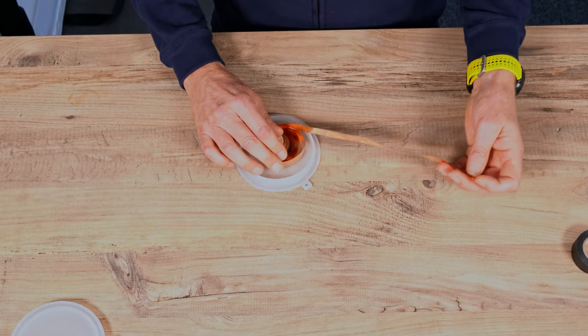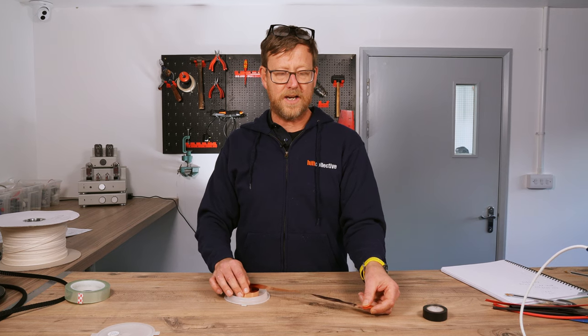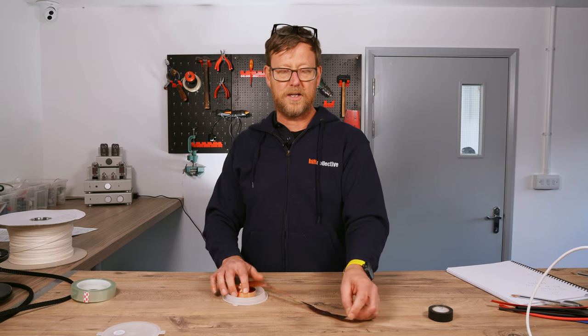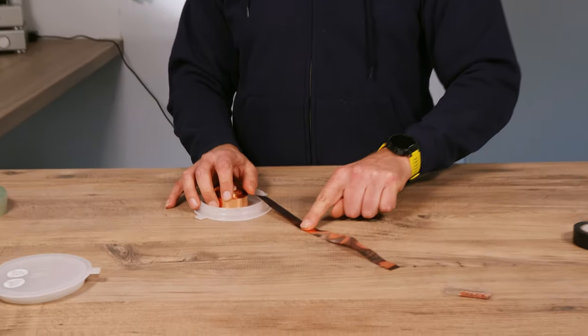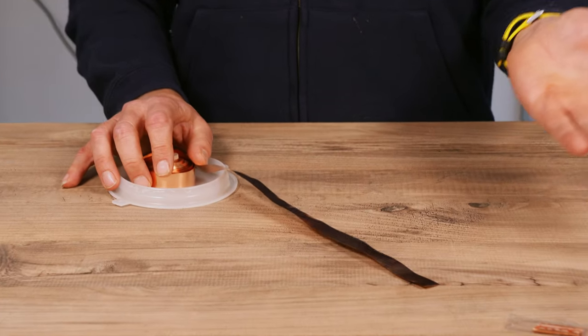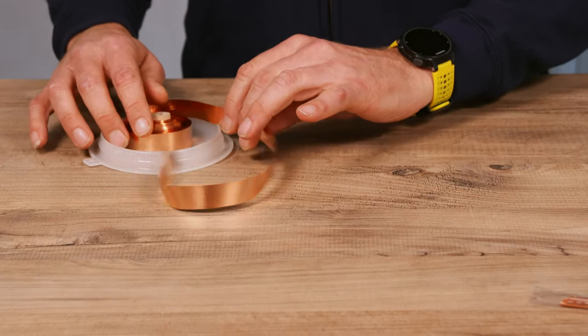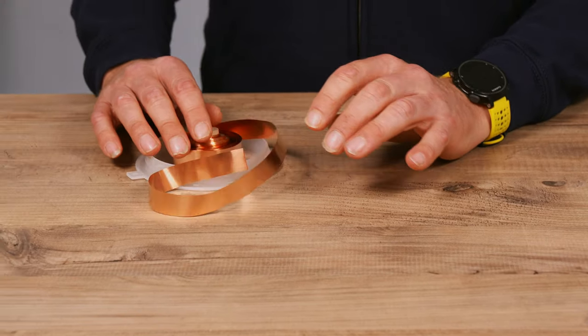When you get yours it will be tightly reeled. The main issue when working with this foil is that it does have a tendency to crimple. Can you see how it's a bit up and downy? I mean obviously it's still going to conduct in that state, but you want to try and keep it as flat as possible.